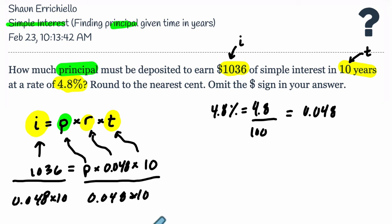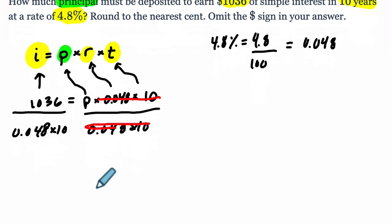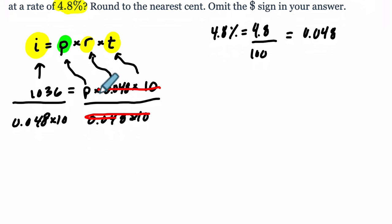Now, on the right-hand side, this product is the same as this. So when they divide, anything, two things you divide that are equal, that equals 1. And now if I scroll down, what does that mean? Well, we have just the principle now. And that equals 1,036 divided by 0.048 times 10. That's what our principle is going to equal.